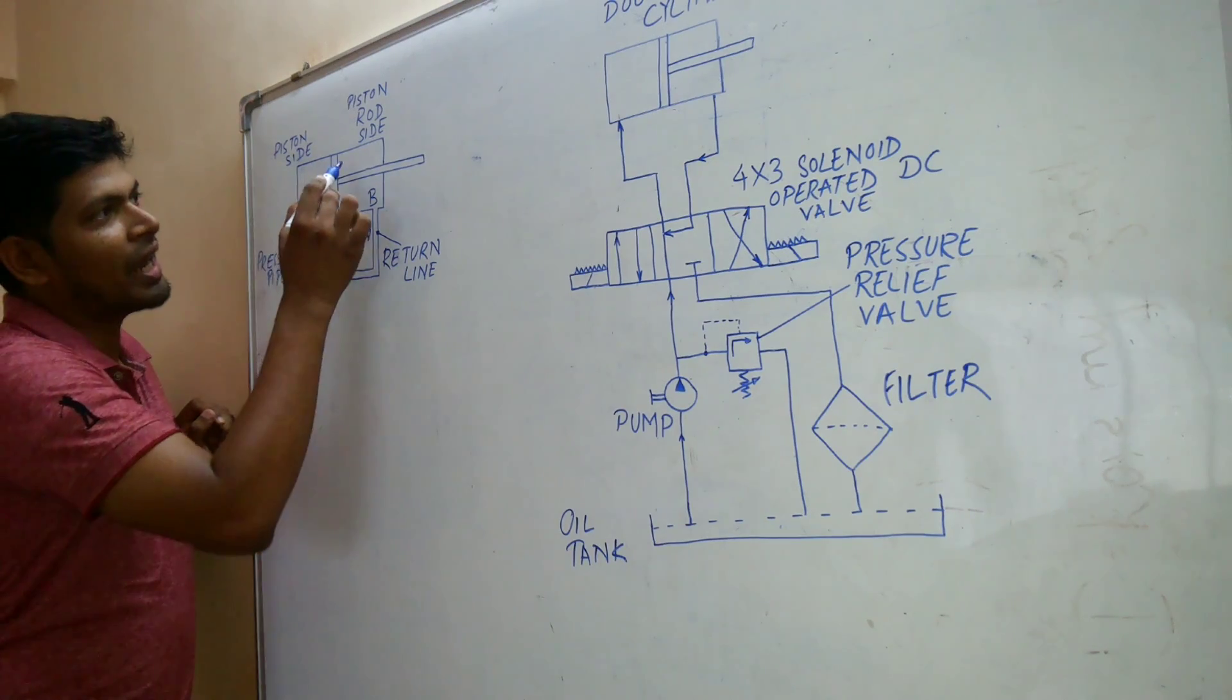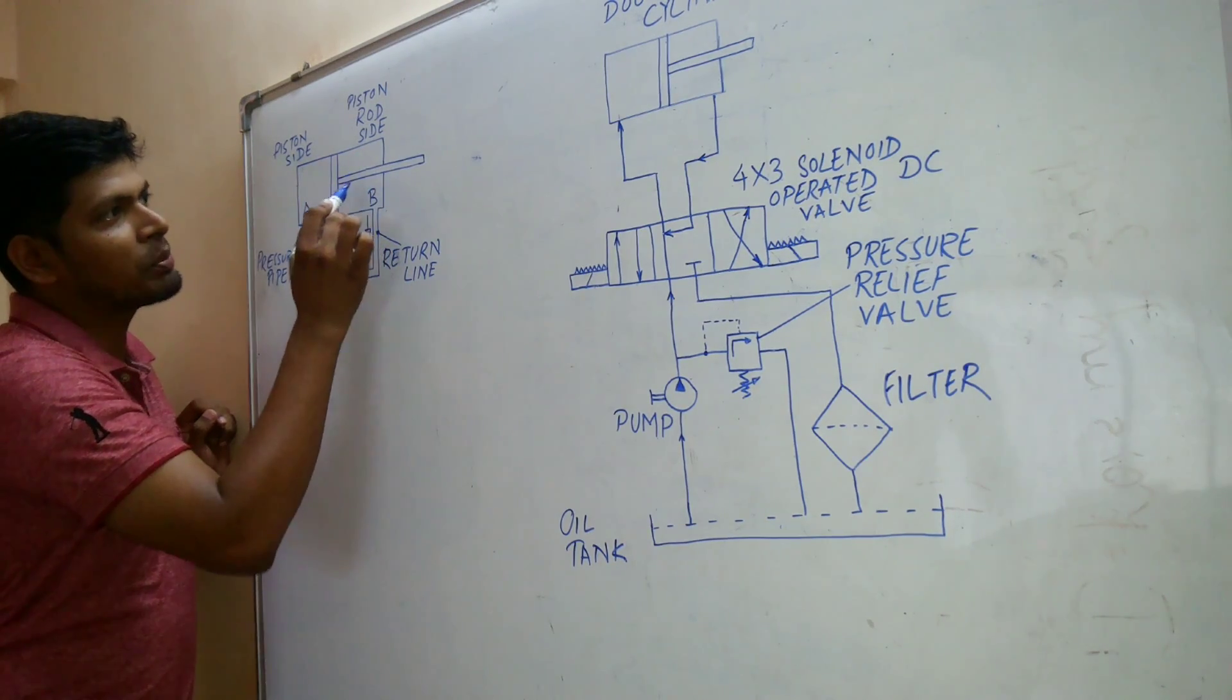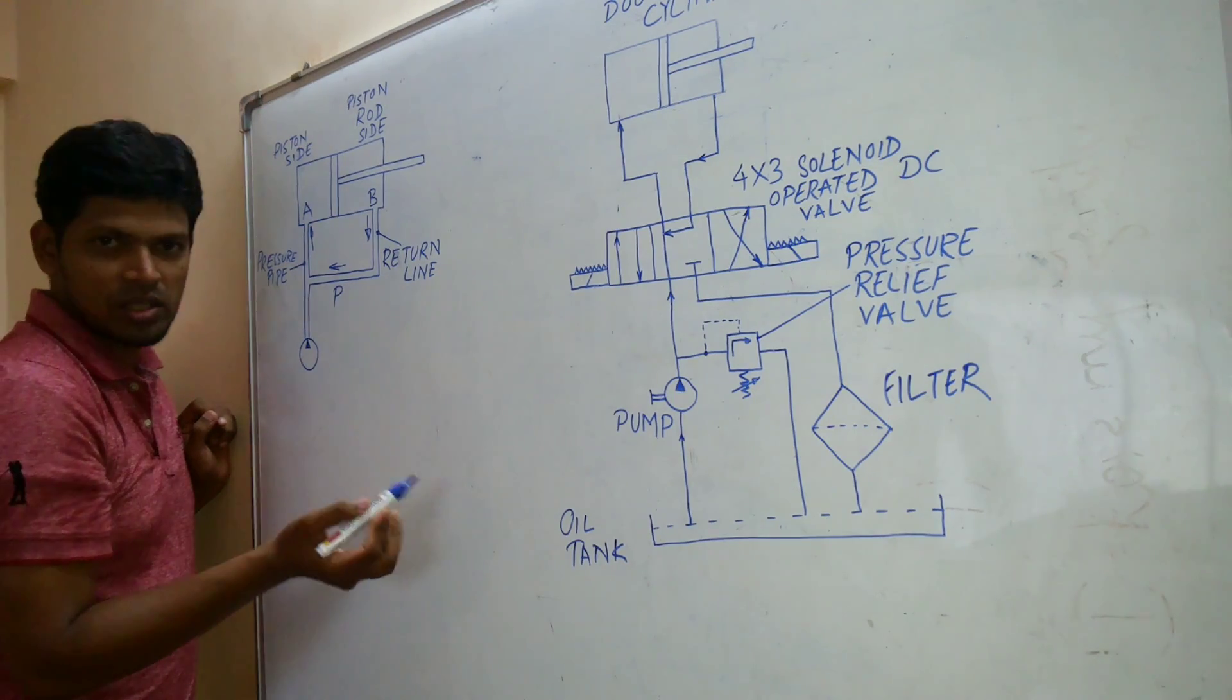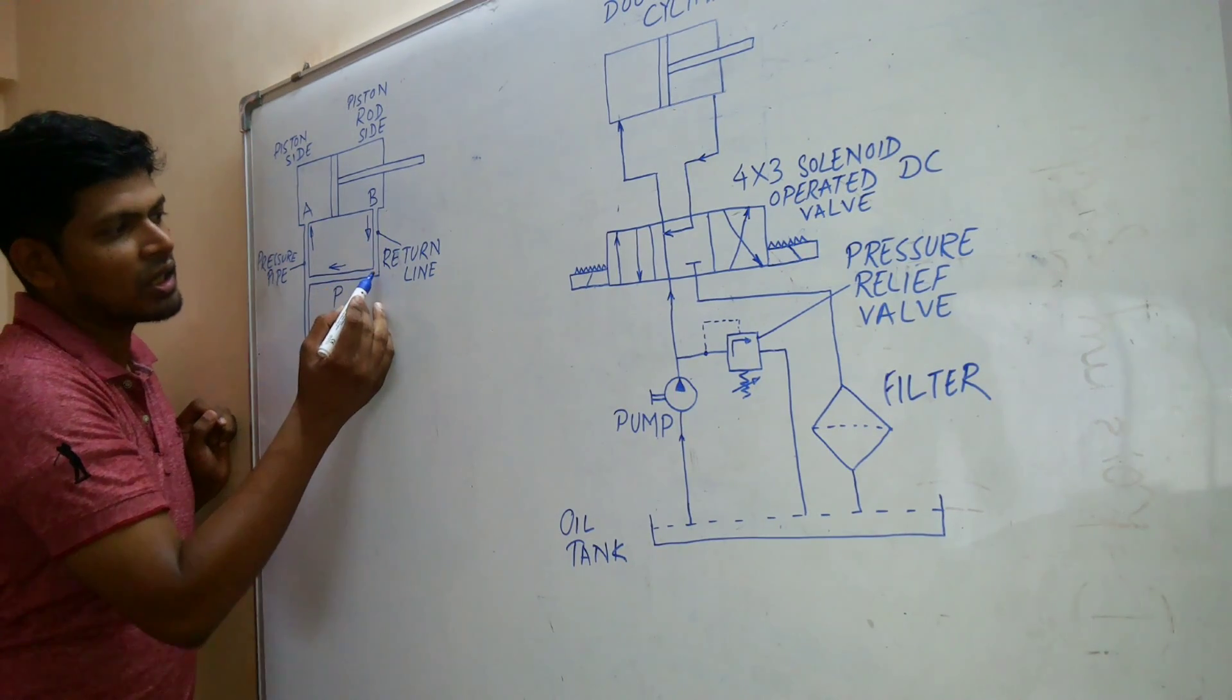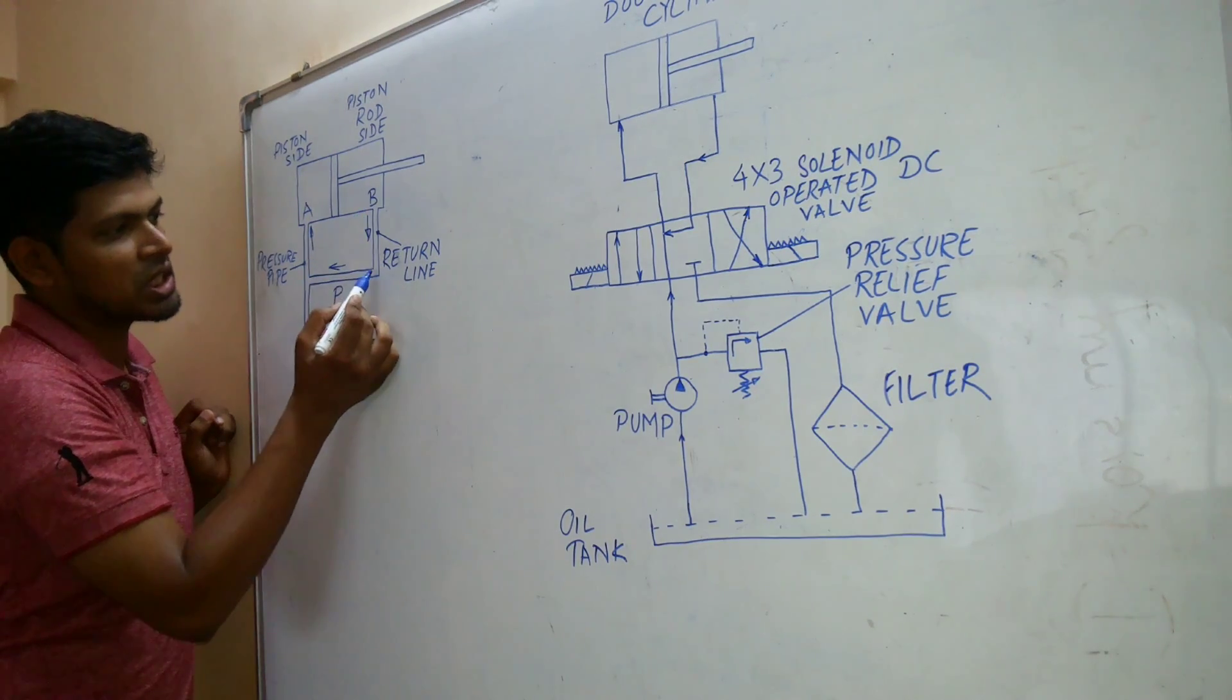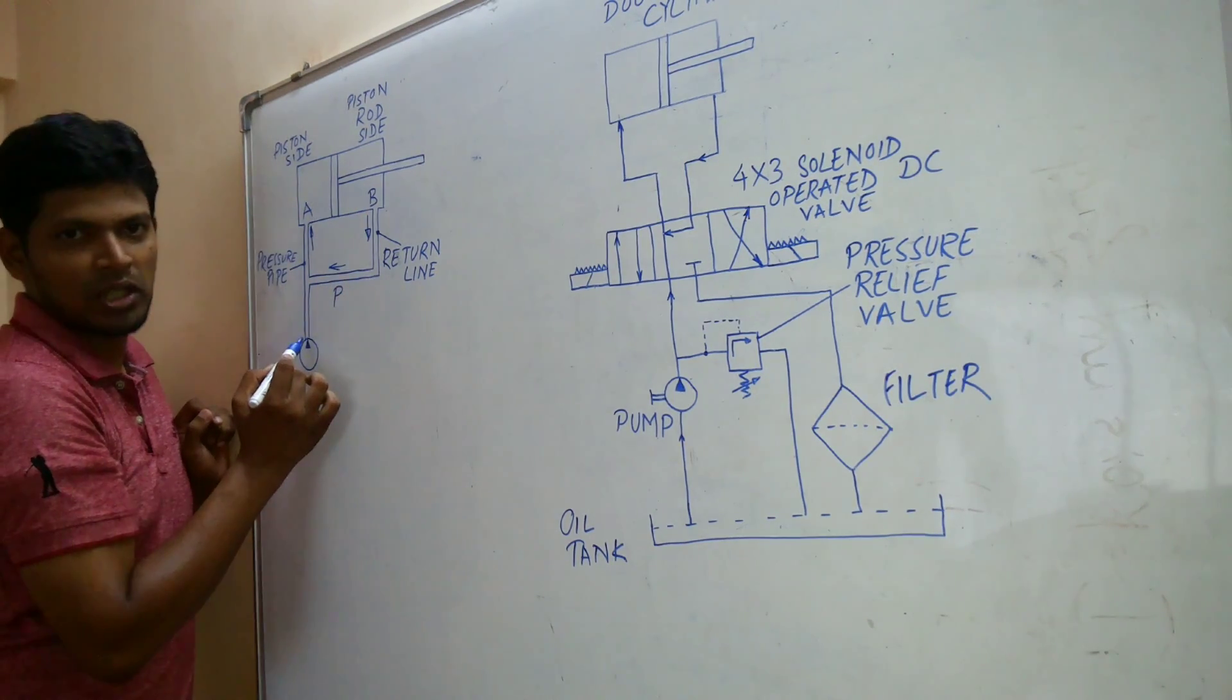The energy which is in the fluid on the piston rod side gets wasted. But instead of getting wasted, what we can do is connect the return line with a pipe like pipe P. We have connected the return line to the pressure line.